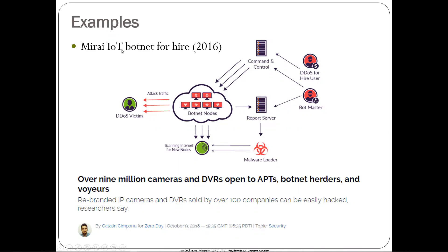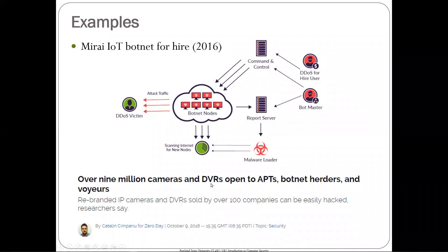They used those default usernames and passwords to get a whole bunch of devices, then used these nodes to scan for more nodes in order to build the botnet. They established command and control and operational control over these nodes, and then based on their operational objectives, they could point these at particular victims and take them offline. The problem is: when you have 9 million cameras out there, who's going to patch every single one? If you deployed a thousand IP cameras and they're all vulnerable, you basically have to throw them all away and reinstall — and nobody's doing that.